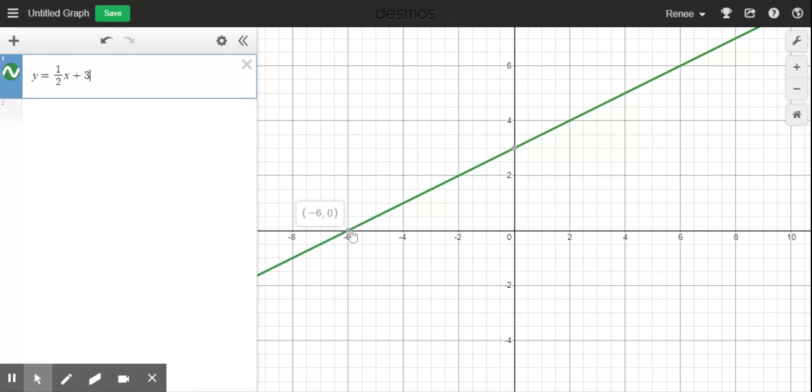I only want to look at the part of the graph that goes from here, which is at negative six zero, up to zero three. And that's the only part of the line I want to see.